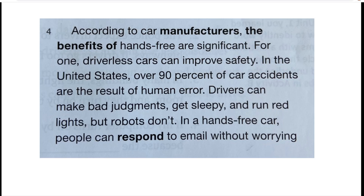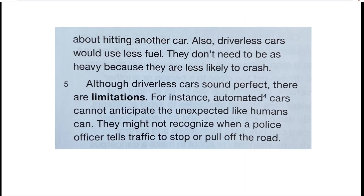We can see a great big one right here: 'drivers can make bad judgments, get sleepy and run a red light.' So make, get, run. Let's keep going — how about paragraph five? Can you see any parallel form in paragraph five?